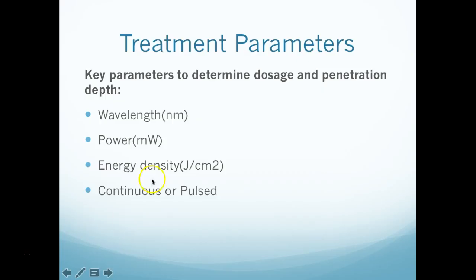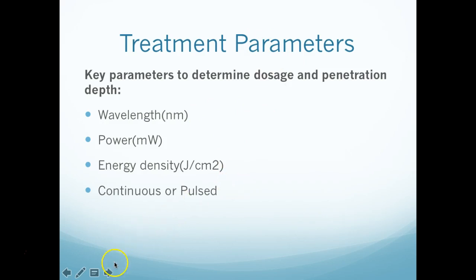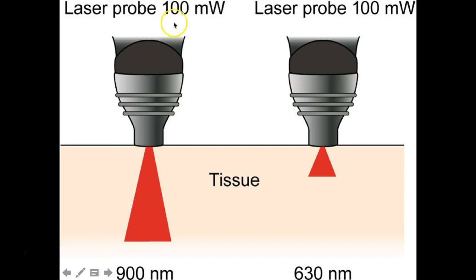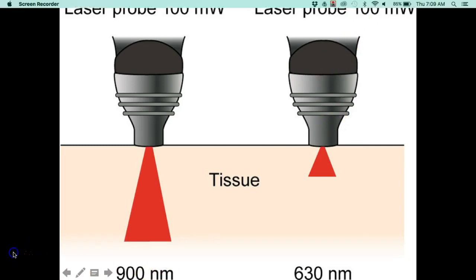The parameters: wavelength is in nanometers, power in milliwatts, energy density in joules per centimeter squared, and it's either continuous or pulsed. These parameters determine the dose and how deep you're going to go — remember, the length of the wavelength helps determine penetration depth. These are the parameters you'll want to document in your SOAP note so someone can replicate your treatment. With a 100-milliwatt laser probe, a wavelength over 900 nanometers penetrates much deeper into tissue, versus a shorter wavelength of 630 nanometers, which is more superficial. So depending on what structure you're treating, you set those wavelength parameters to get the results you want.